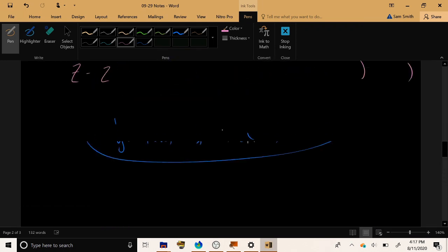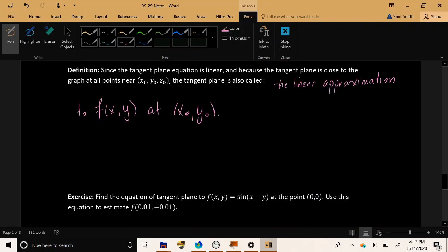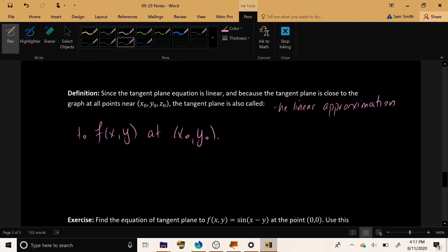All of the variables in the tangent plane equation have exponent one, z to the first power, x to the first power, y to the first power. So this is a linear equation with two variables, and it can be used to approximate the function's output at points that are near the given point.